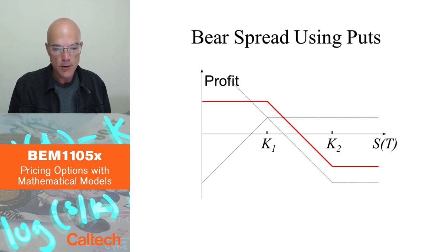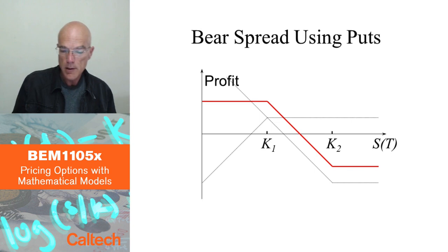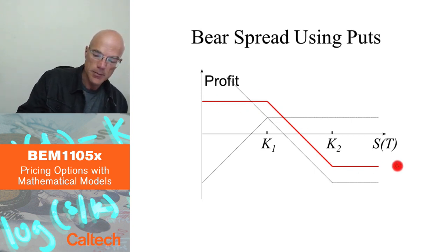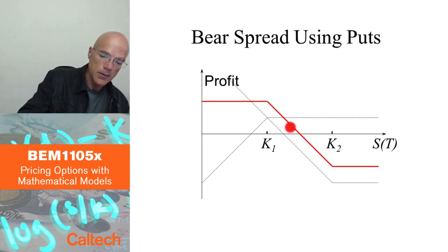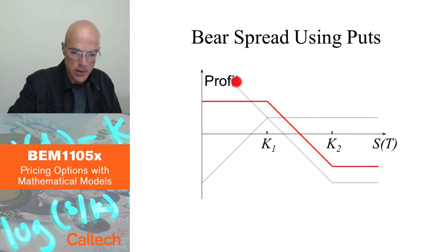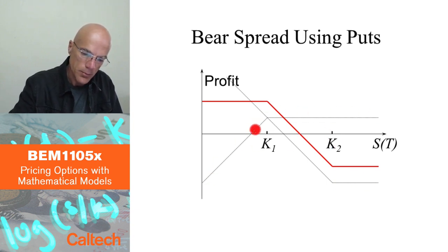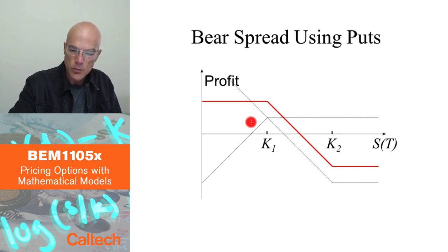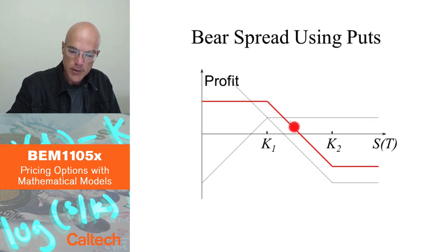If there is a bull spread, there should be a bear spread. A bear spread: if you are currently somewhere in the middle, you make money if the underlying moves down, up to some limited profit, and you lose money — also limited — if the underlying goes up. Here it's done using puts: you buy a put with strike price K2 and sell a put with strike price K1. The combination of the two gray positions gives you the red bear spread payoff.